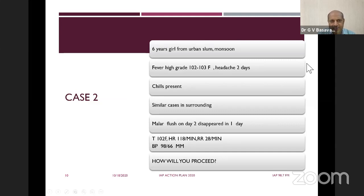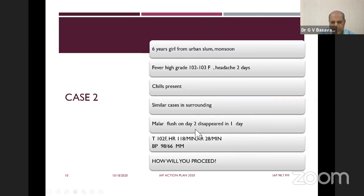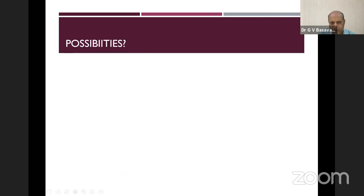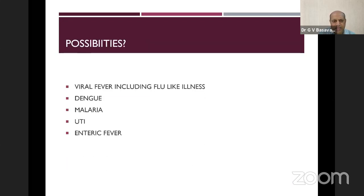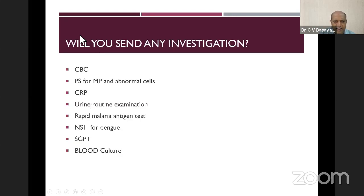The second case: a six-year-old girl from an urban slum during monsoon with onset of fever 102 to 103, associated chills, similar complaints in surrounding children. There was a macular flush which disappeared on day two, and this child has a high-grade fever of 102 with a pulse rate of 180 — next blood pressure is normal. Possible diagnoses: viral fever, dengue, malaria, urinary tract infection, and enteric fever. Routine investigations were sent along with NS1 antigen and blood culture.